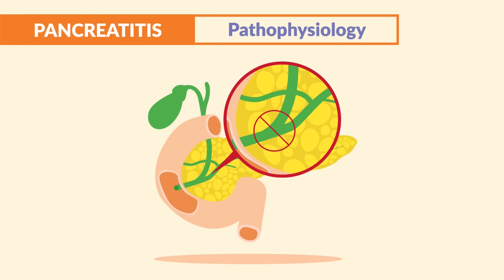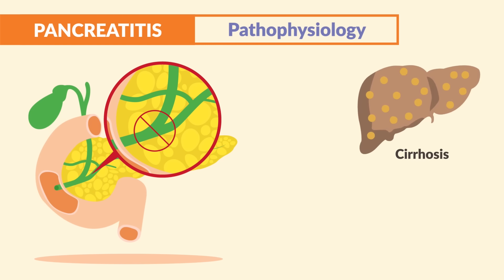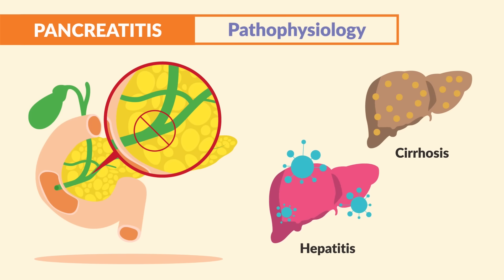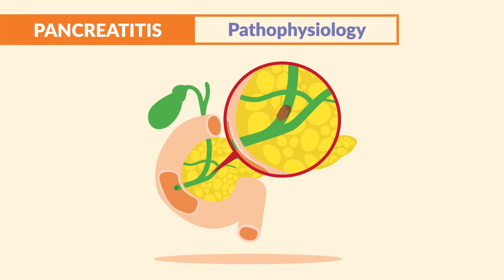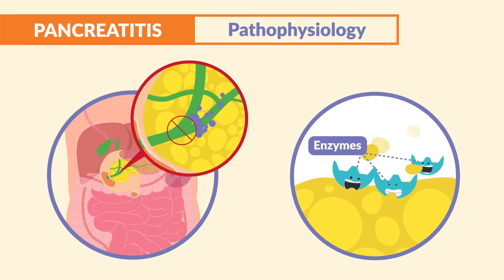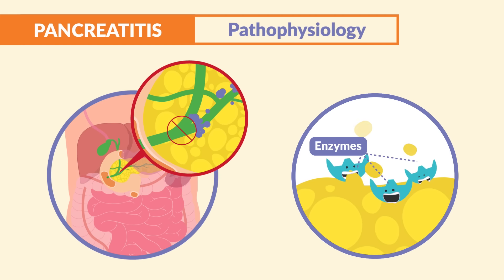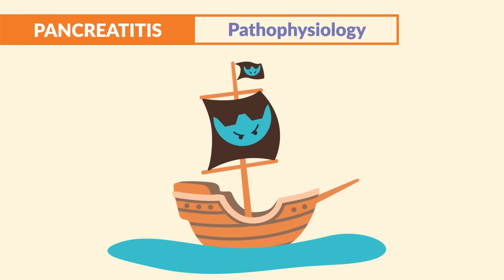If the pancreatic duct is blocked for any reason — say from inflammation in liver cirrhosis or hepatitis, or a gallstone that has floated down and got stuck — the enzymes can't get out of the pancreas and into the intestine, and they prematurely activate within the pancreas.